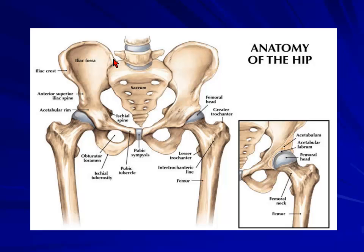When talking about the iliac bone, this is the body of the ilium. You've got the iliac crest, the medial and lateral side. As you come along, if you run your finger through, the anterior-most process is the anterior superior iliac spine. You've got a notch there, and then as you come down, you've got the anterior inferior iliac spine.